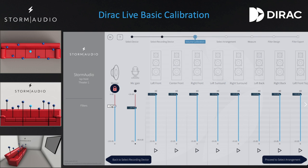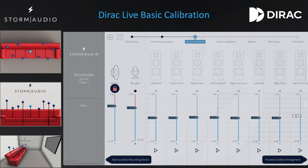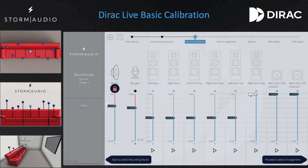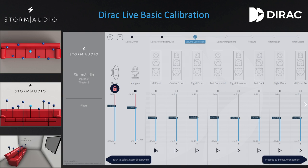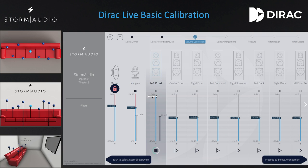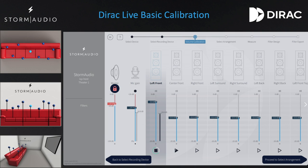To avoid both speaker and ear damage, never begin by measuring a speaker with no attenuation. Instead, set each speaker level to approximately minus 10 dB. Now that the speaker levels are attenuated, begin by calibrating the left, center, and right front speakers, as they are typically the farthest from the listening area and may require adjusting the master output level.